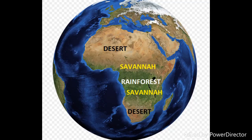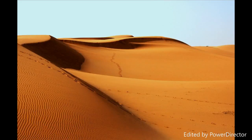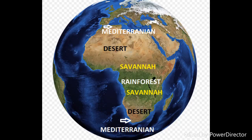One desert region, the Sahara, is in the northern hemisphere and is the largest desert in the world. The other two, the Namib and Kalahari deserts, are in the southern hemisphere.